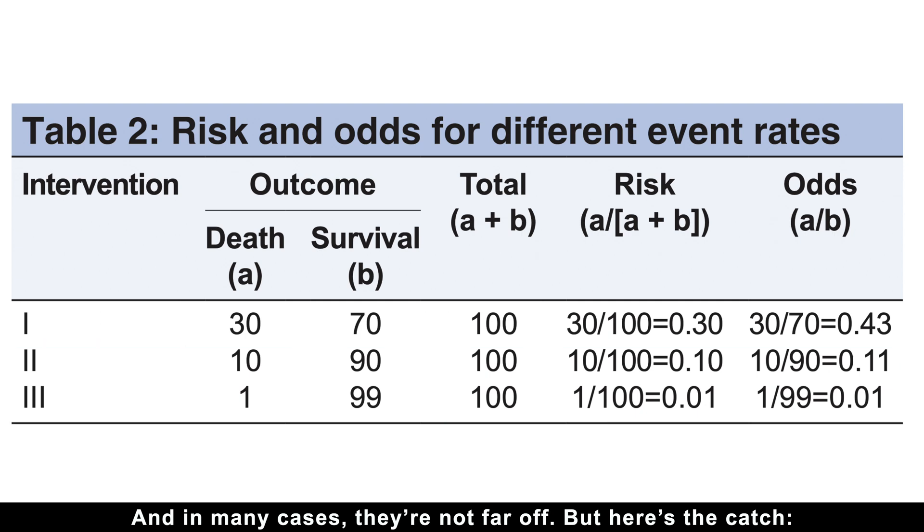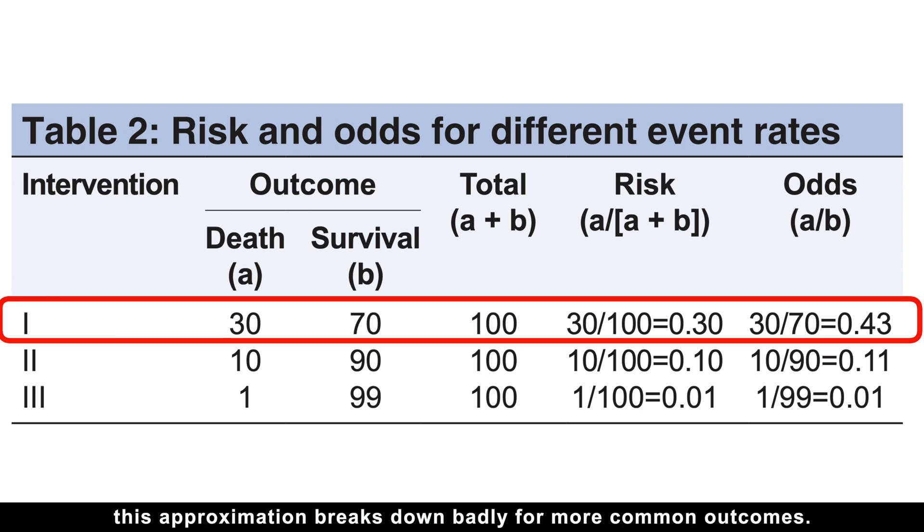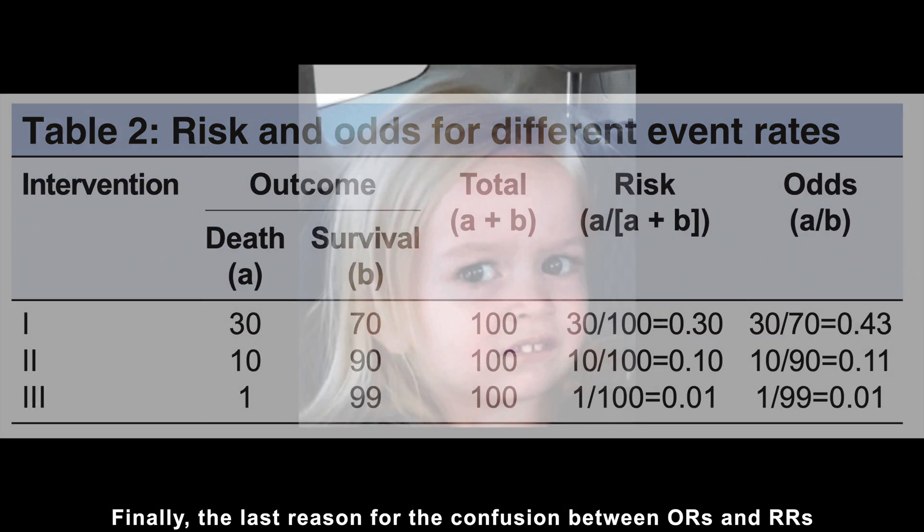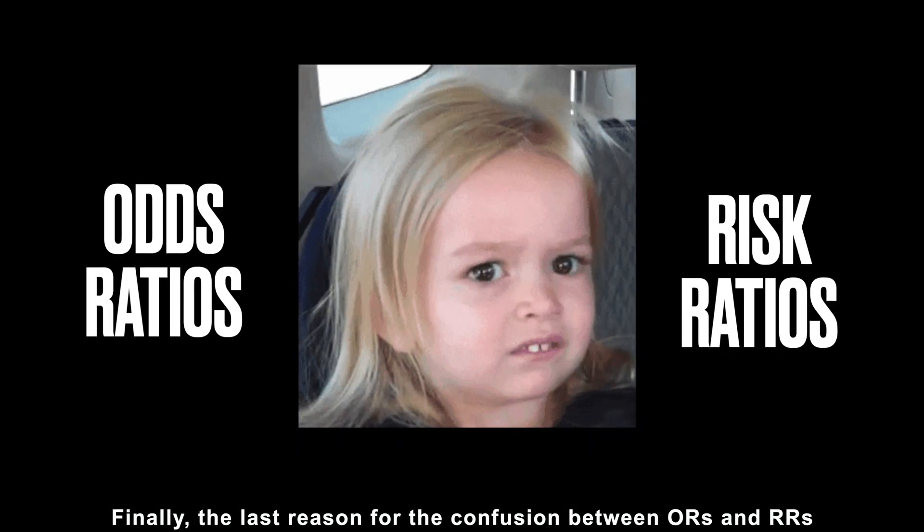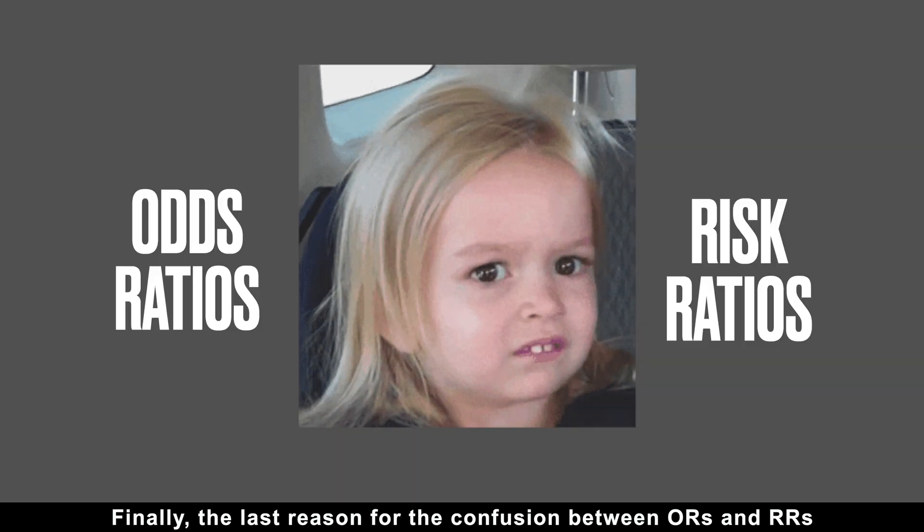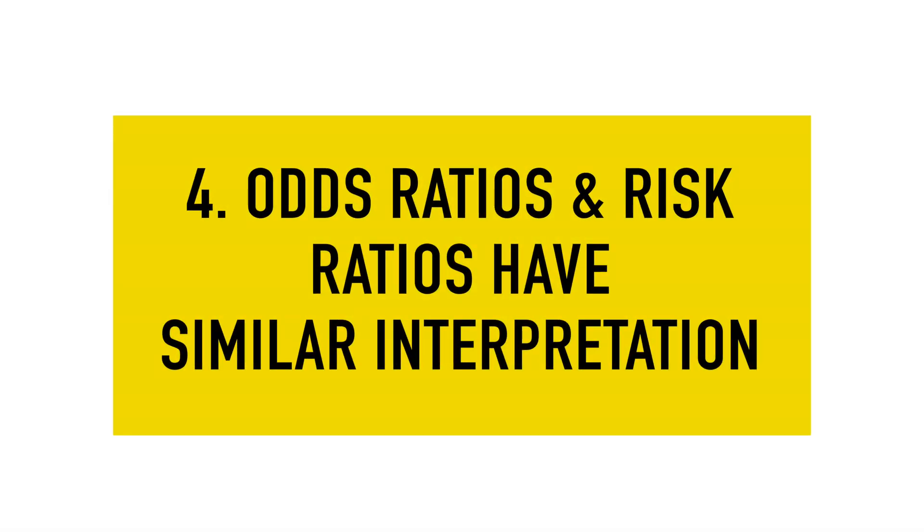But here is the catch. This approximation breaks down badly for more common outcomes. Finally, the last reason for the confusion between odds ratios and risk ratios stems from their similar interpretation.